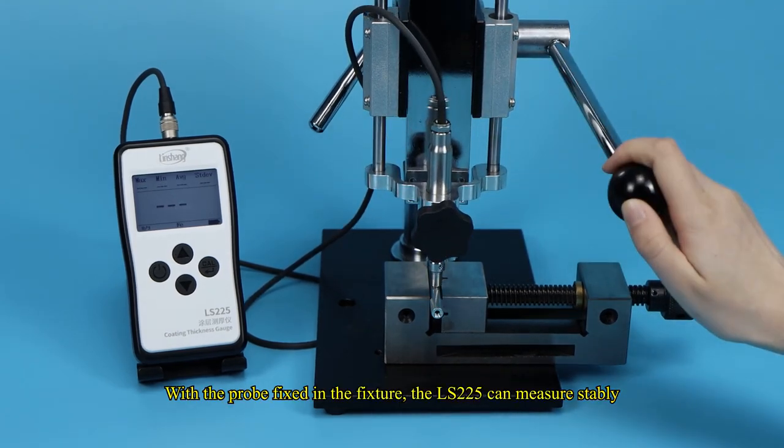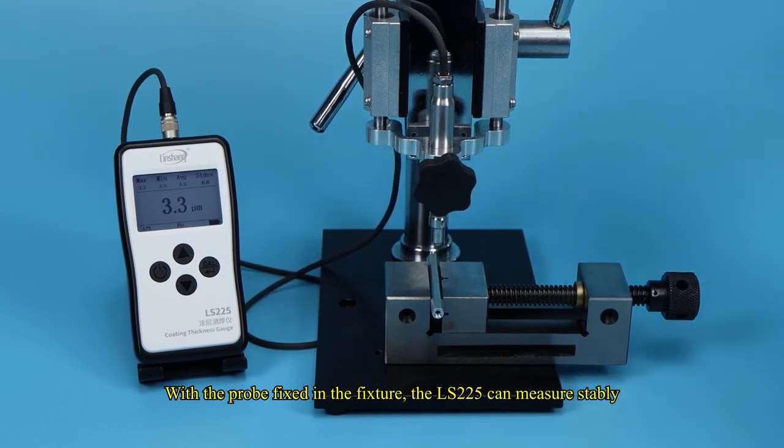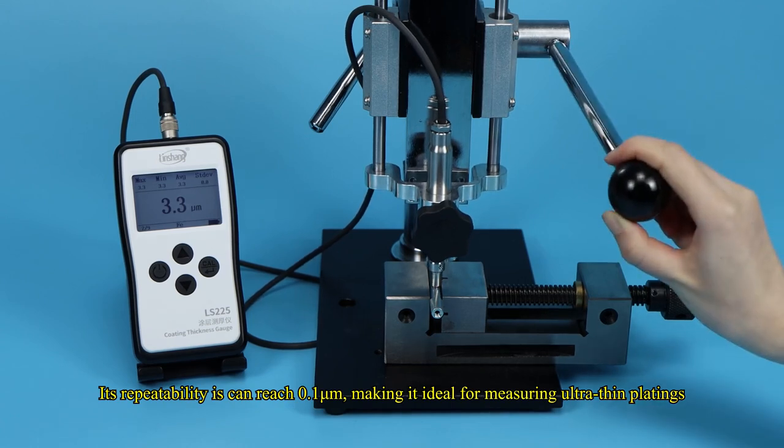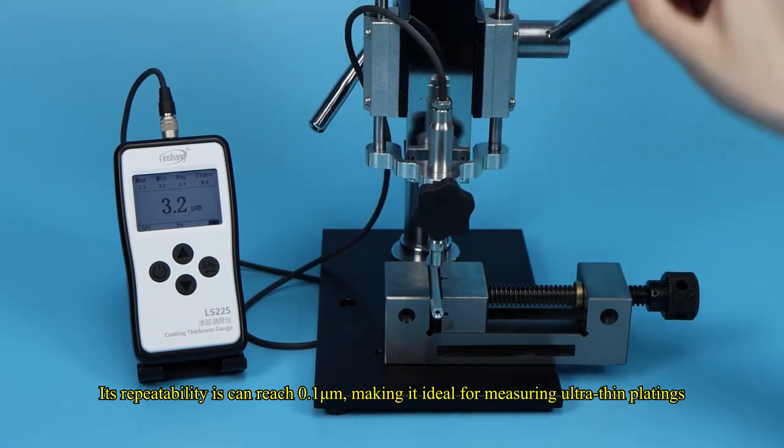With the probe fixed in the fixture, the LS-225 can measure stably. Its repeatability can reach 0.1 micrometers, making it ideal for measuring ultrathin platings.